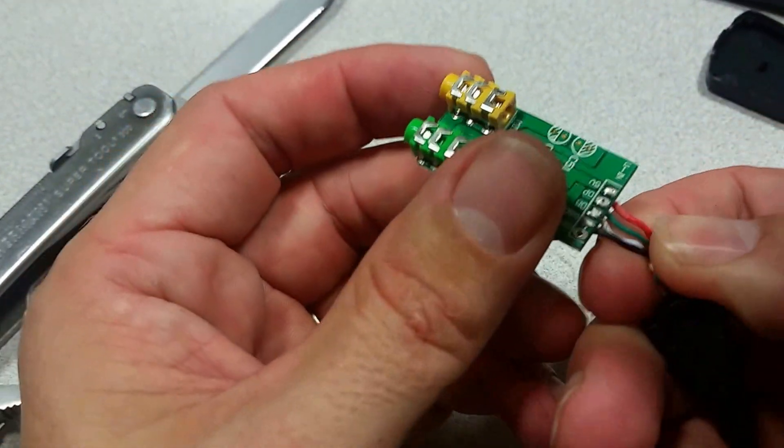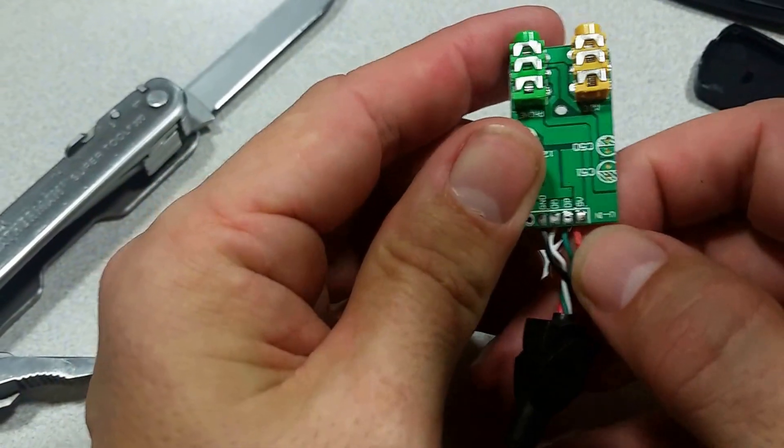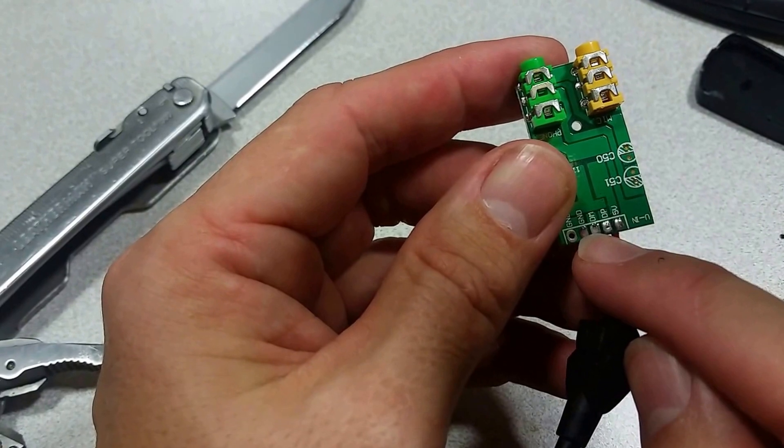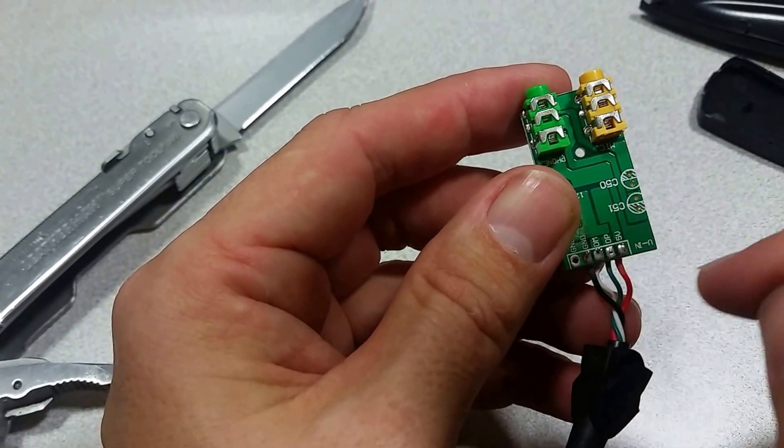Okay, so here we have the USB connector. Nicely marked. Five volts, ground, and your transmission pins.